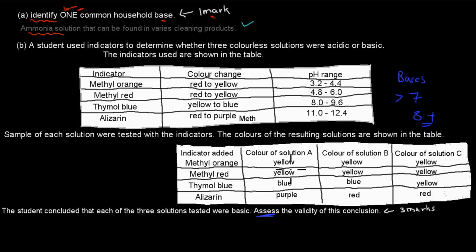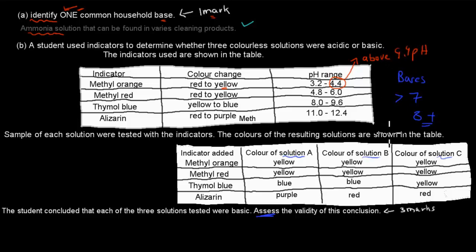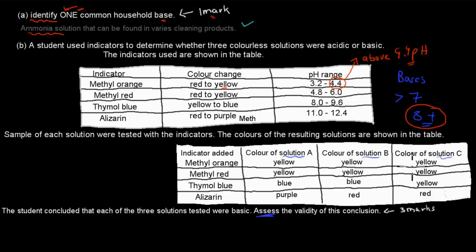We can use these indicators to figure that out. Using methyl orange, solutions A, B, and C all turned yellow. Methyl orange turning yellow means the pH is above 4.4. So using the first indicator, we know all three substances have a pH above 4.4. That means it's still plausible they're all bases — it could still be acidic or neutral — but it's consistent with being a base.